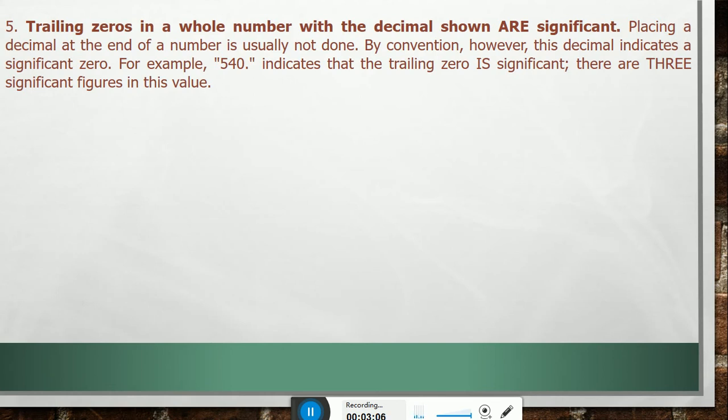The dot is obviously a decimal. It indicates that the trailing zero is significant. There are three significant figures in this value. If this dot is not there, then only two significant figures.